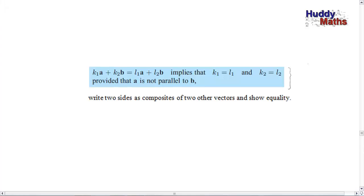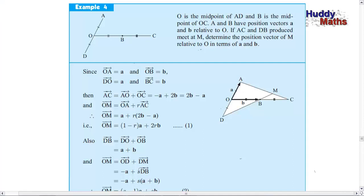O is the midpoint of AD, B is the midpoint of OC. OA has position vector a, OB has position vector b. Immediately we can say: since D, O, A are collinear and O is the midpoint, DO has the same direction as OA and equal length — so DO equals vector a. Similarly BC equals vector b, since O, B, C are collinear and B is the midpoint. If AC and DB produced meet at M, find the position vector of M relative to O.